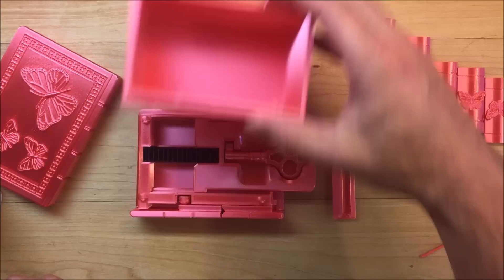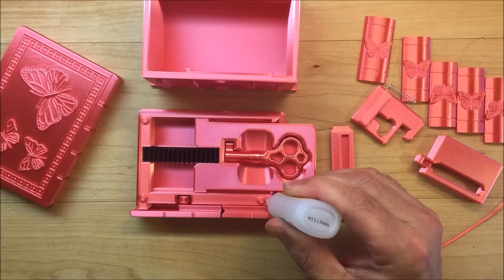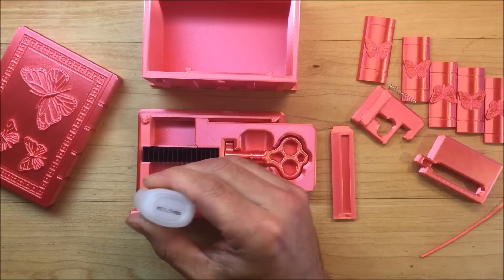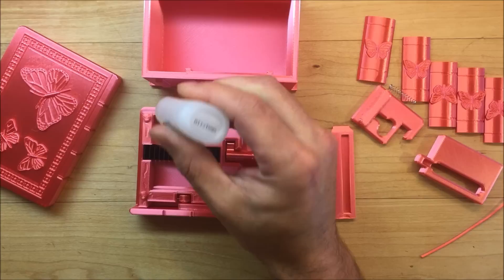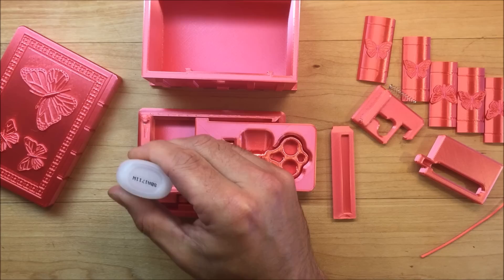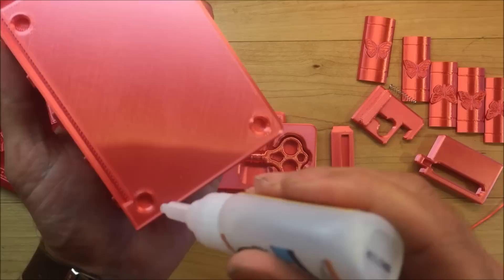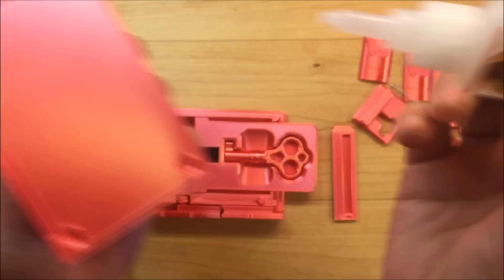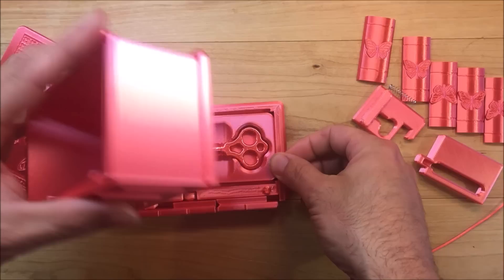For gluing the bottom on, I normally glue around here, all around the outside. Careful not to put too much on. Then I also normally put some around these holes, these three holes on the bottom. Once it's all glued and you got all your pieces, you can put it together.